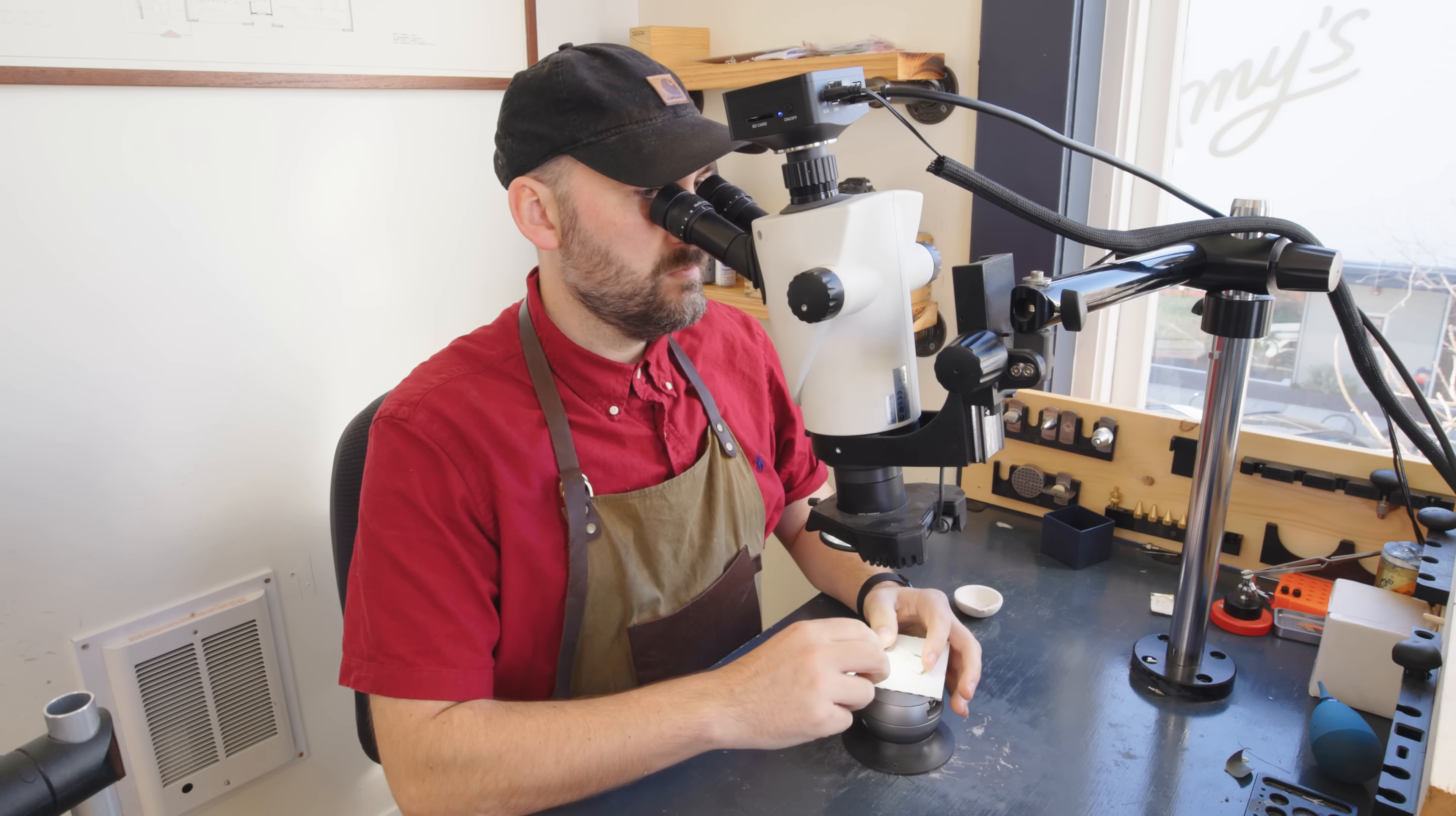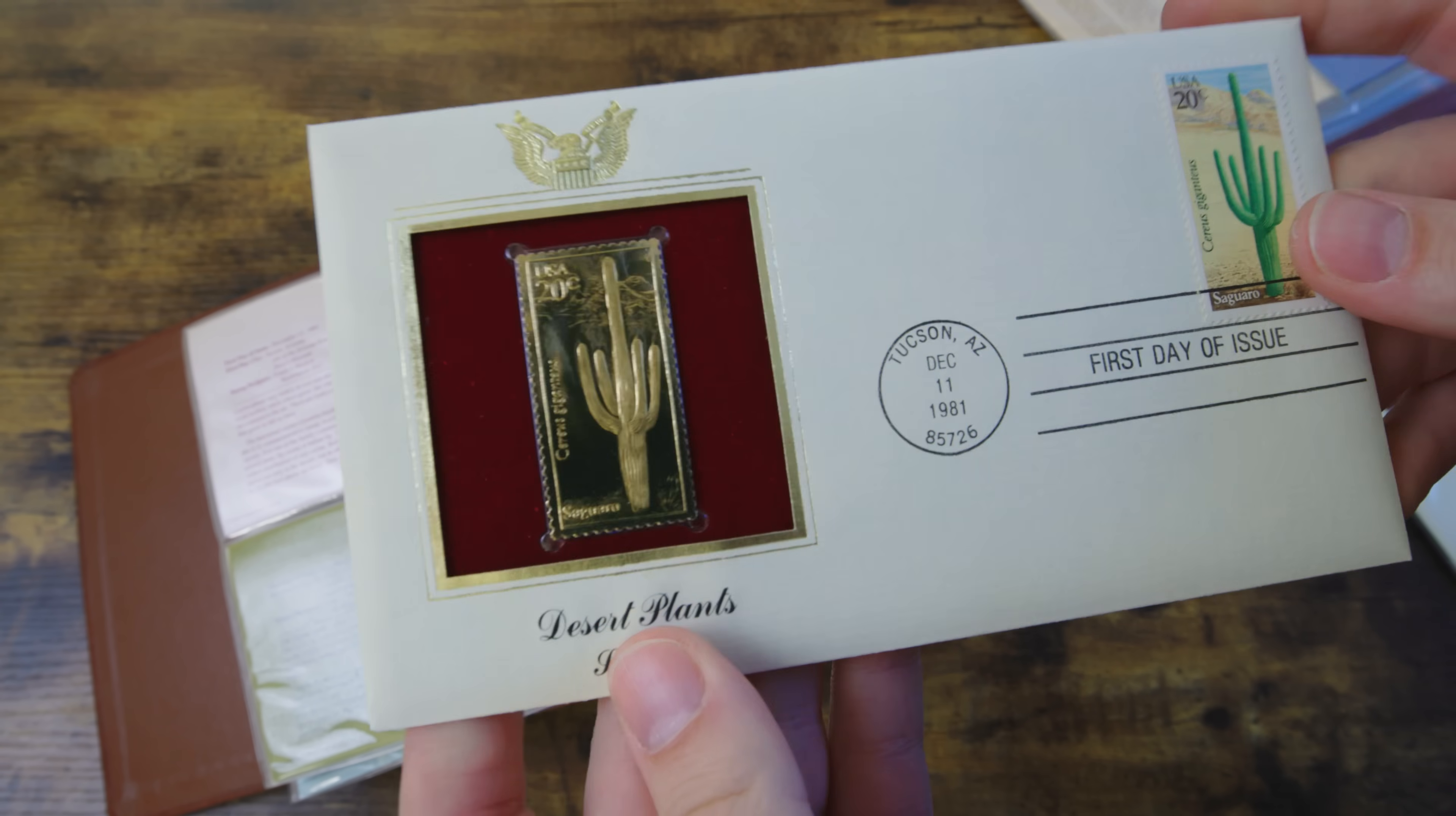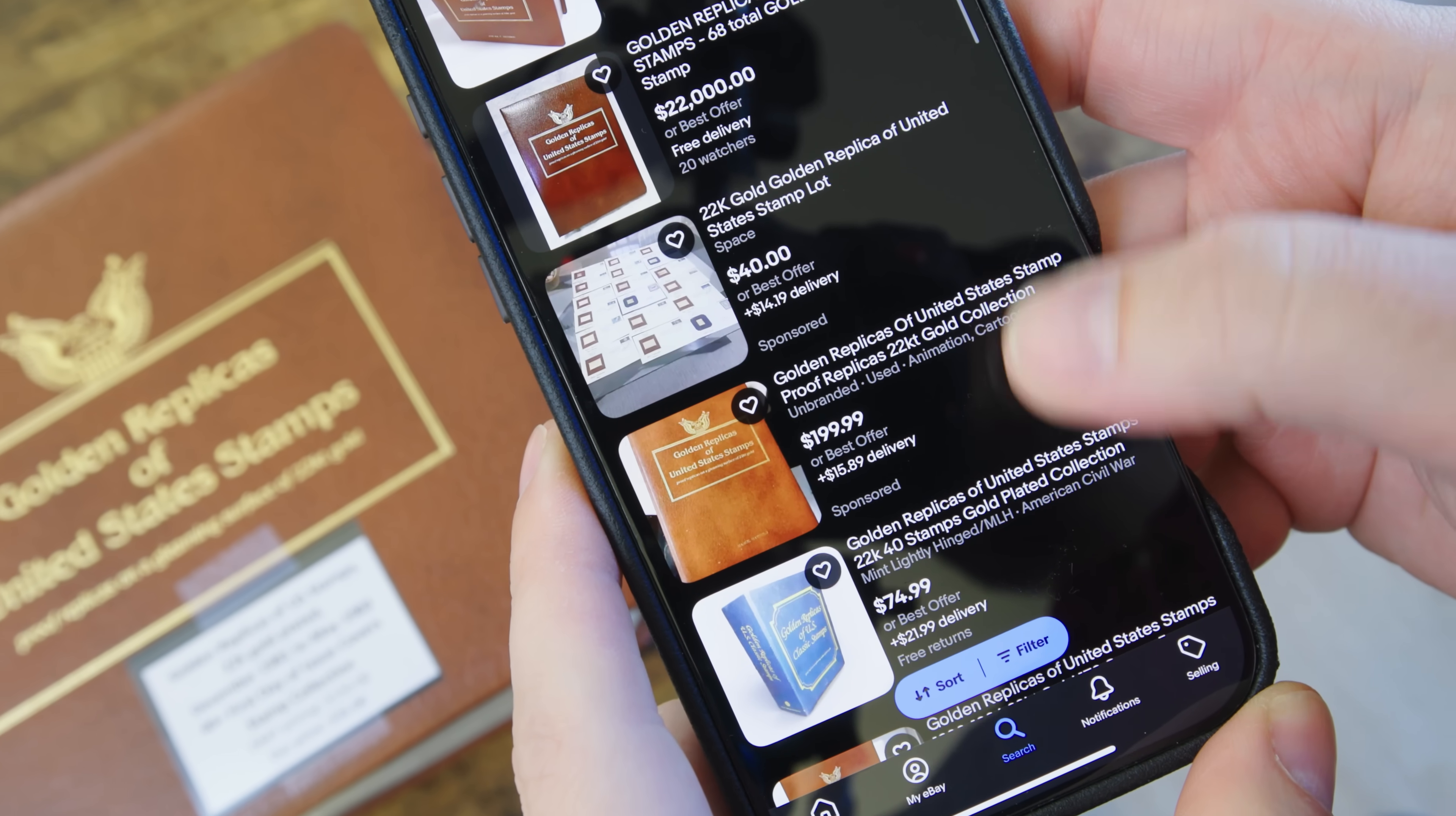And by the end hopefully we will know if it's worth it to buy things like this at a thrift store. Let's go ahead and dive in. Now I really do want to emphasize that these stamps are replicas. And not only that, you can find dozens of these for sale on eBay. Heck you can even pay $22,000 for this one if you wanted to.